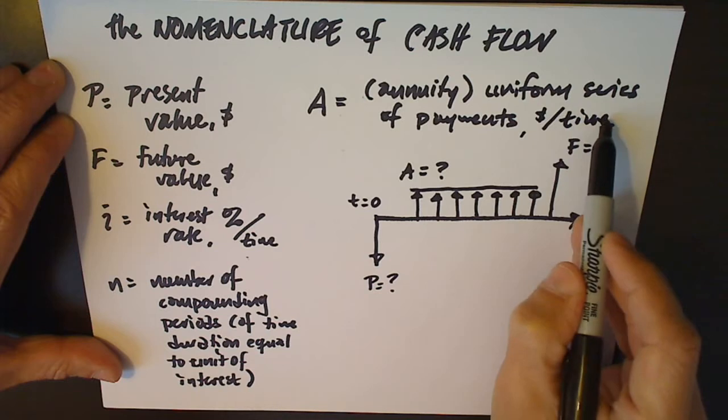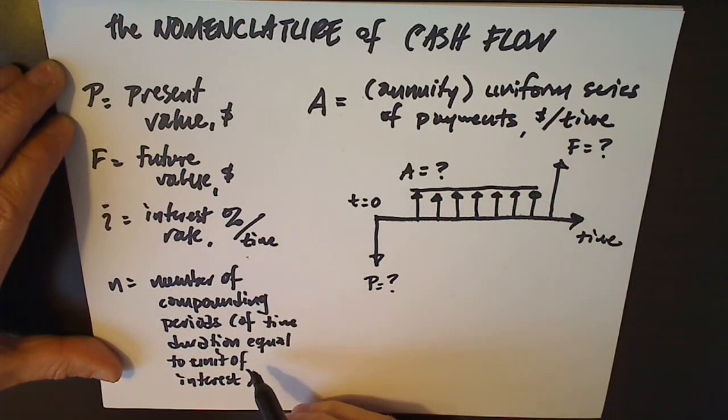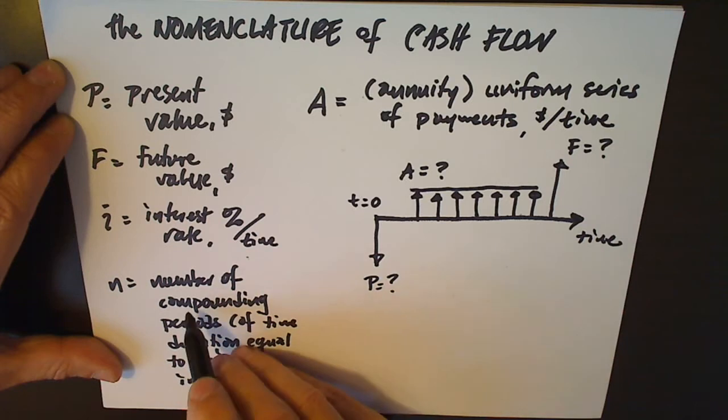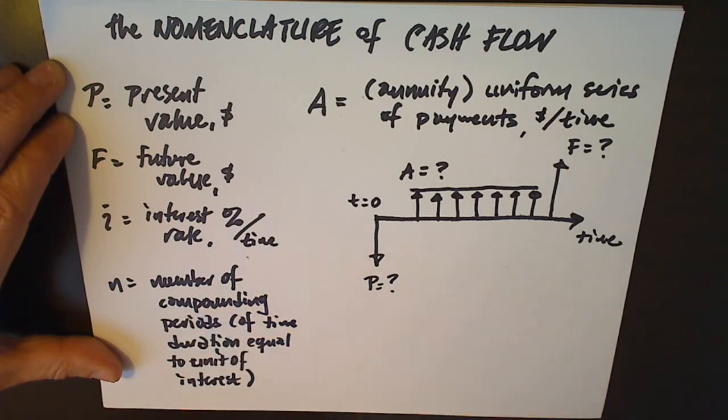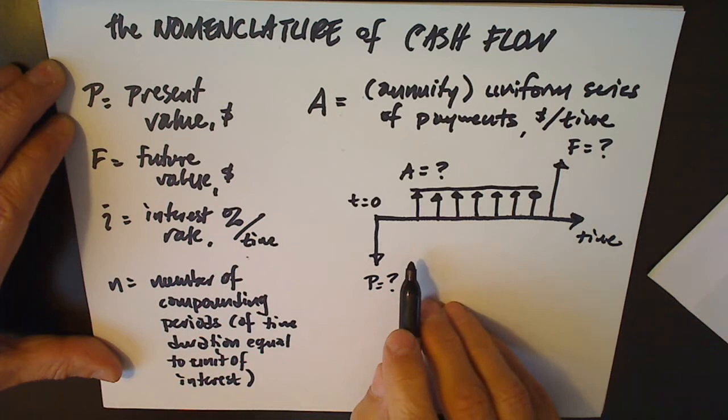And it's important that this unit of time corresponds to the unit of time in the interest rate and the unit of time in the calculation of the number of compounding periods. So what does this look like when we're trying to use the equations that relate A to the other variables?